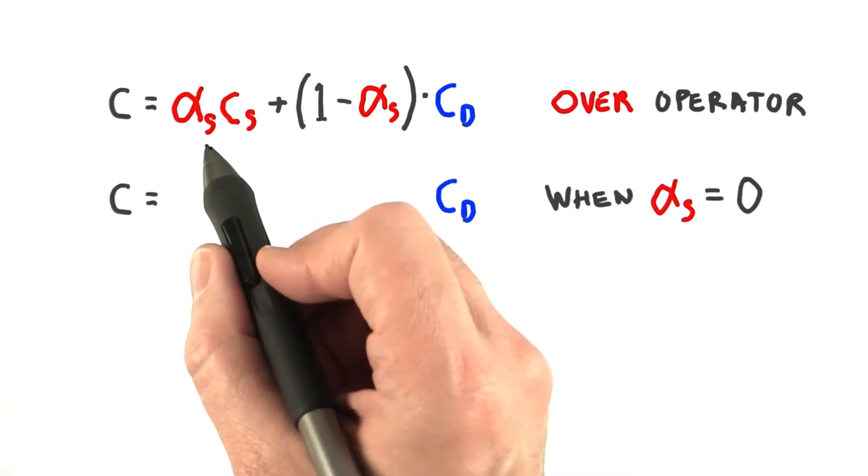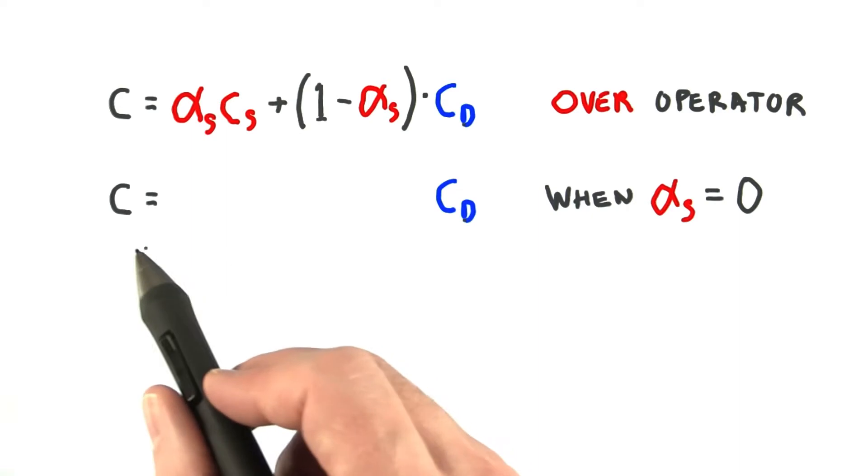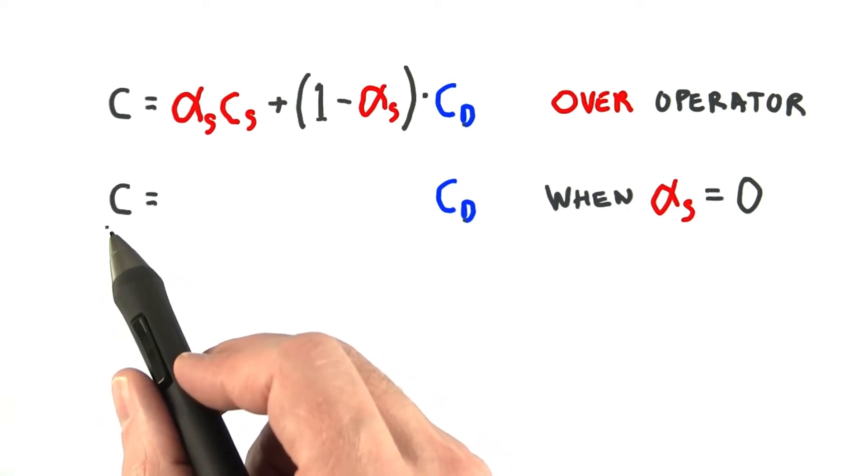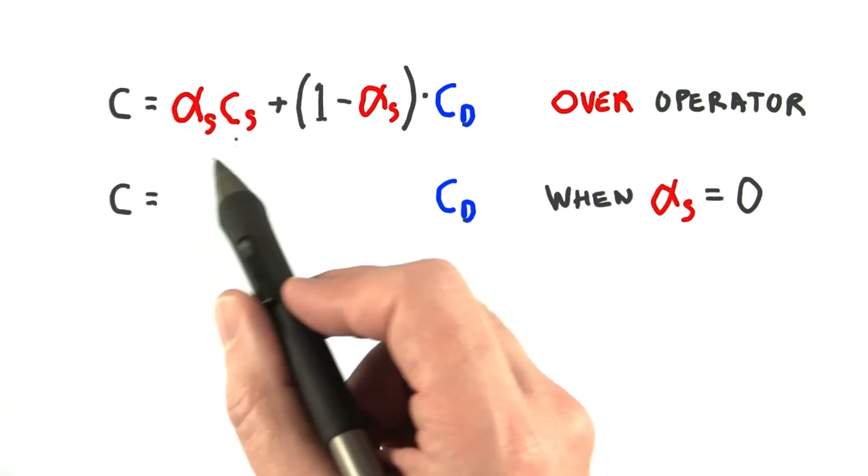The alpha of the source, our transparent filter, can be any value from 0 to 1. If the value is 0, this equation simply becomes C is equal to the destination color, since the source filter is entirely transparent.